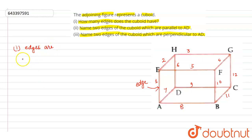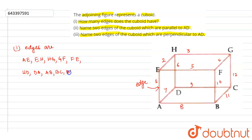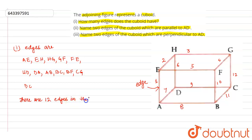The edges are: AE, EH, HG, GF, FE, HD, DA, AB, BC, BF, CG, DC. So there are 12 edges in the cuboid.